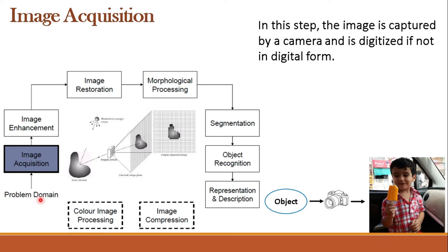Generally, the image acquisition stage involves pre-processing such as digitization and scaling. Scaling is needed because the size acquired by the camera may be larger or smaller than desired, and digitization is needed because the image captured by the camera may be analog — you have to convert it to digital form since we are doing digital image processing. Light falls on the object, is reflected, captured by the camera, and projected onto the image plane, forming pixels in the digital image.